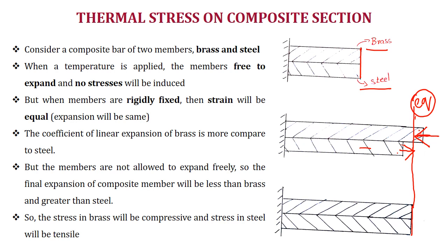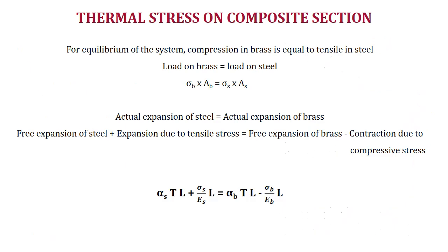If a composite section has one material with a higher coefficient of linear expansion (brass) and another with a lower coefficient (steel), the higher expansion material (brass) will carry a compressive load and the steel will carry a tensile load. For equilibrium, compression in brass equals tension in steel, so the load on brass equals the load on steel. Using the equation: load equals stress times area.